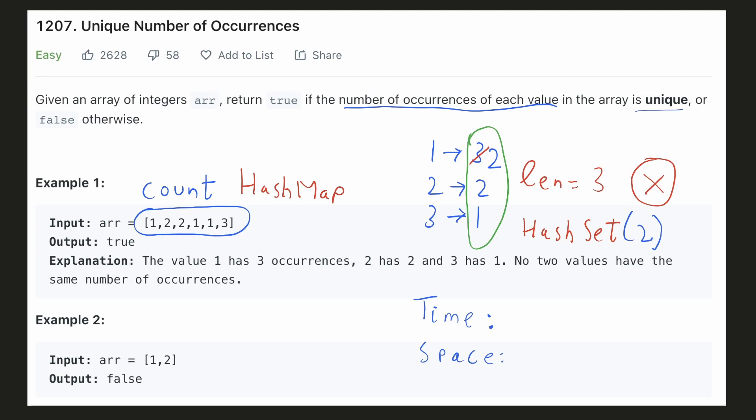The time complexity of this would be O(n) because we have to go through the array once to create a hash map and then we'll have to go through the frequency values only once to add it to the hash set.